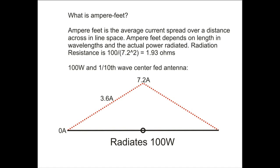Let's talk about ampere-feet and what it is, and tie it into radiation resistance. The ampere-feet is the average or effective current — the current integrated over a distance across space that's inline from point A to point B. The ampere-feet depends on the length in wavelengths and the actual power radiated. I'm going to use an example antenna and go through some different current distributions, which will highlight some of the misunderstandings people have when trying to make more efficient small antennas.